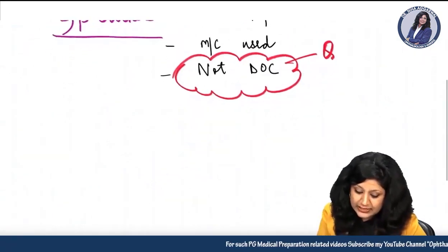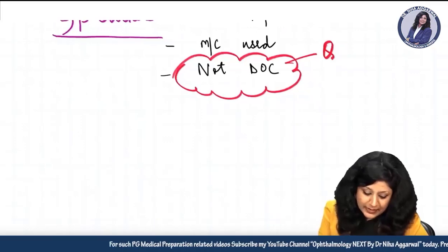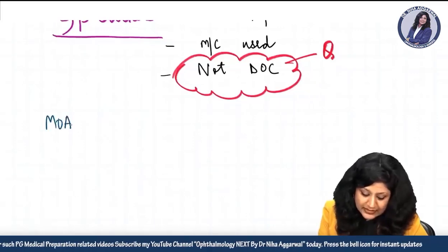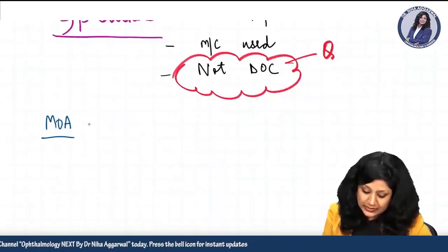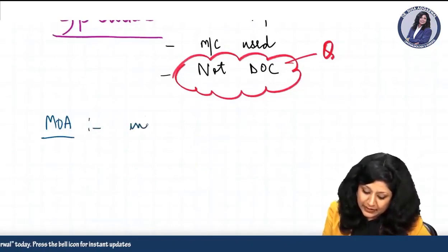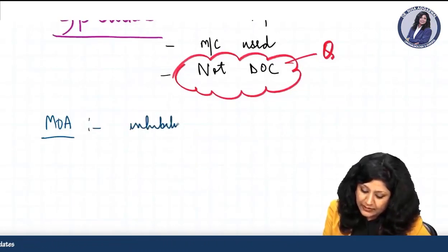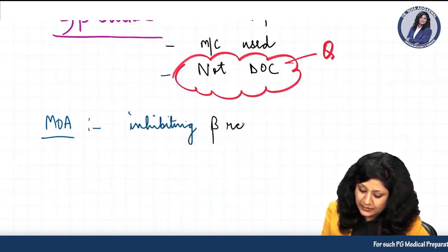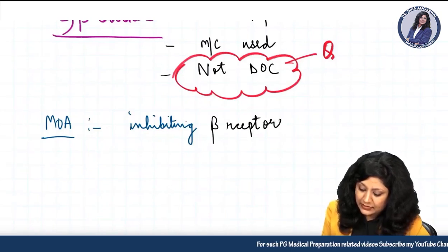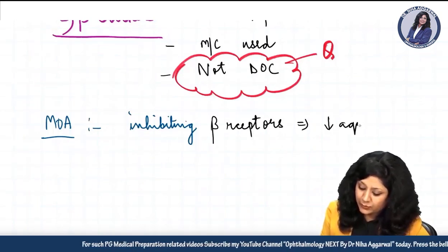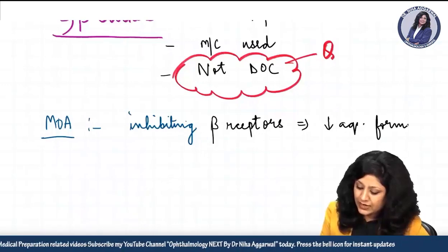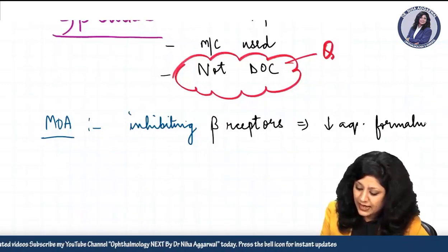Before going into detail, we should know about the mechanism of action of beta blockers. They are actually inhibiting the beta receptors, and therefore they are decreasing the aqueous formation.